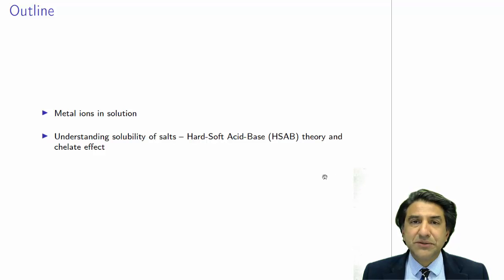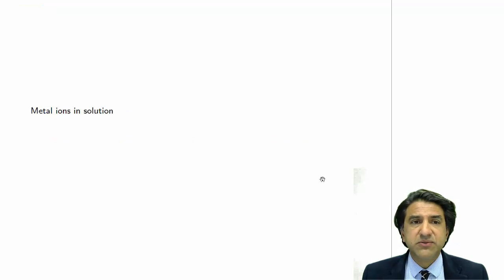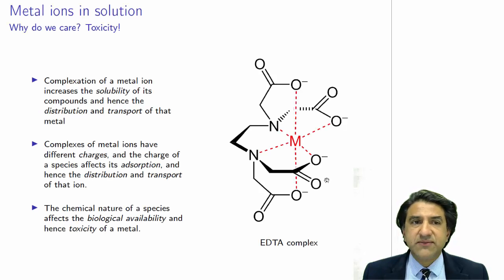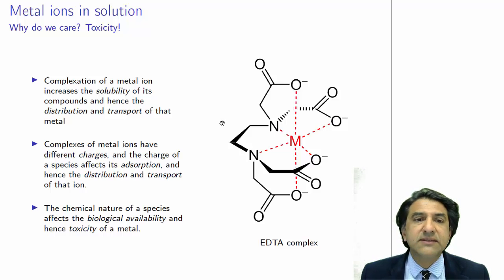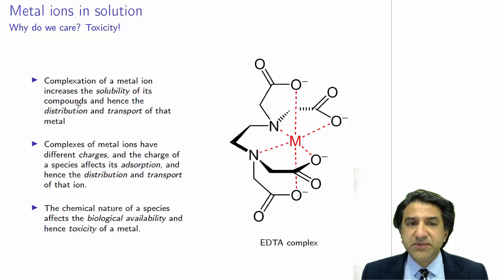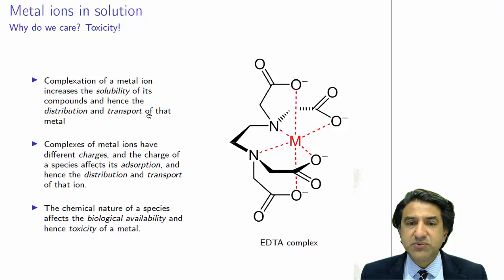That's a really great theory to predict, just from some simple rules, whether things will be insoluble or soluble. Let's talk about metal ions and solutions first. Why do we care about whether metal ions are soluble in water or not? Well, the main reason is toxicity. Complexation of a metal ion increases its solubility, and that means it increases its ability to distribute itself and transport itself around the environment. And that's important, especially if the metal is toxic.